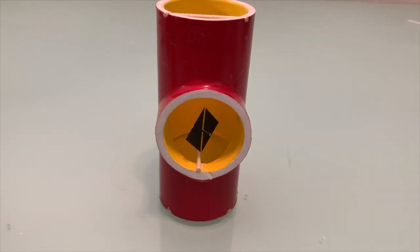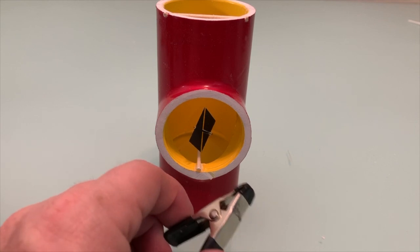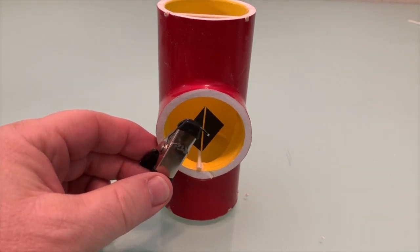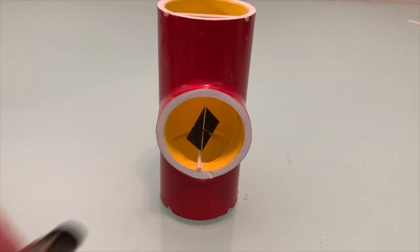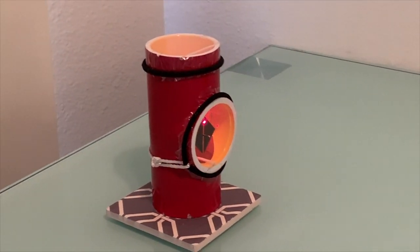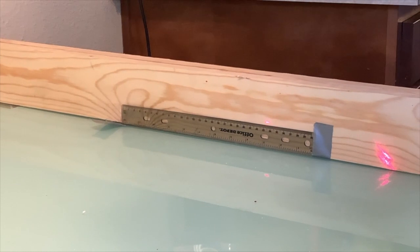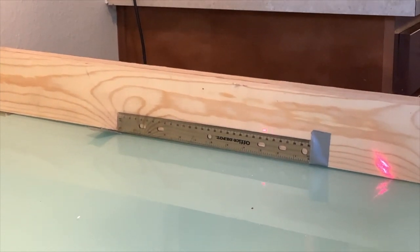The instrument is called a torsion balance, and it works by suspending a sensor, in our case a small but very powerful magnet, from a fine filament, so that it's free to track the direction of the local magnetic field. By bouncing a laser beam off the sensor onto a distant wall or screen, we can easily track these shifts in real time.